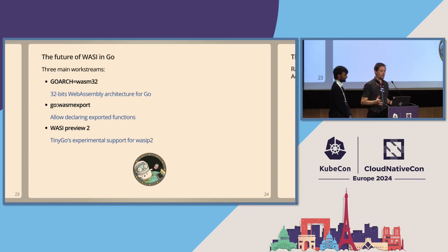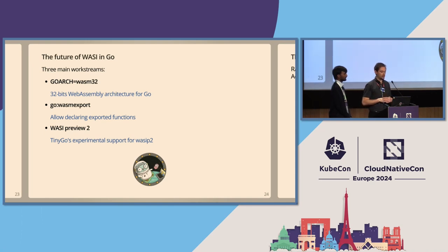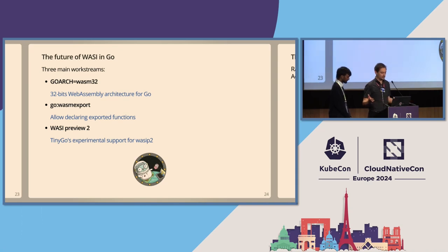To wrap it up, let's take a quick look at what's happening today in Go. Two proposals have been accepted by the Go team and are being worked on. The current WebAssembly architecture in Go uses a 64-bit address space, even though all WebAssembly hosts assume 32 bits. This hybrid model complicates interaction with the host — we're working on addressing this in a new WASM32 compilation target. The second proposal intends to address current limitations by adding a go:wasmexport compiler directive, allowing developers to declare Go functions that are exported in the compiled WebAssembly module. We're also working on adding experimental support for WASI Preview 2 in TinyGo.